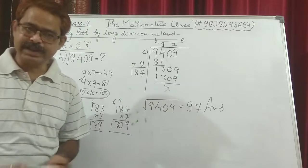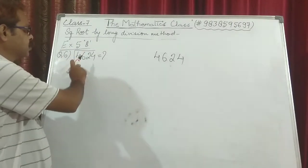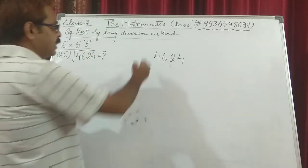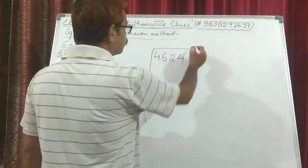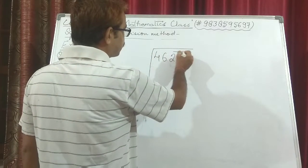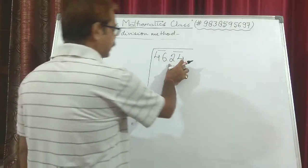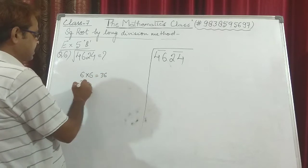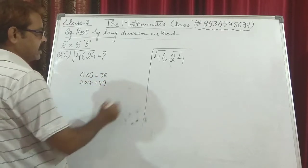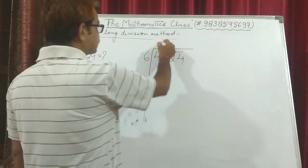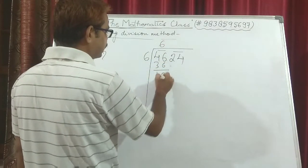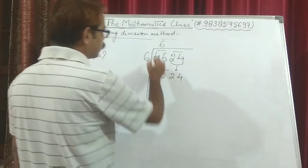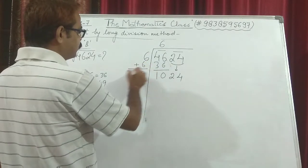Now we move on to question number 6: find the square root of 4624 by division method or long division method. Again, we make pairs of 2 from right to left. First pair is 46, second is 24. We know 6 into 6 is 36 and 7 into 7 is 49, so we use 6. 6 times 6 is 36. The remainder is 10. We carry down the whole pair 24, giving 1024. 6 is added to this 6, giving 12.